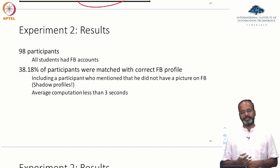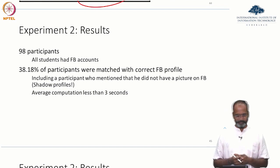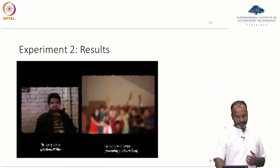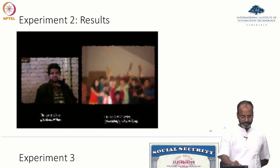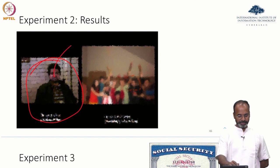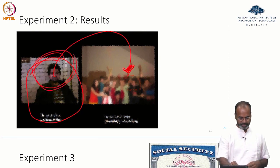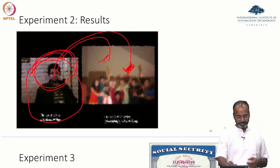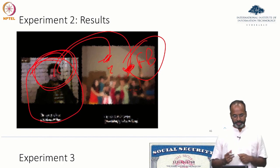There was one participant in the study who said he had never uploaded a picture on Facebook, but the researchers found a picture where he appeared. Average computation time was just 3 seconds. An anonymized example: they took a study picture of a participant and used this picture to find that this person was in a group picture from Facebook. This is the study picture taken — and this is the matching picture from Facebook of the user.